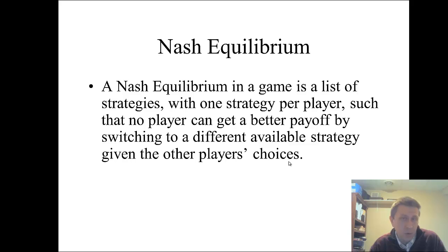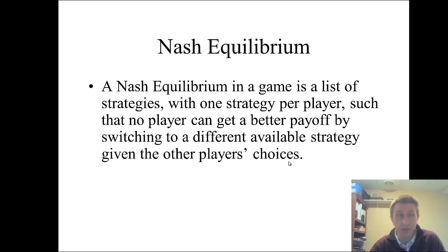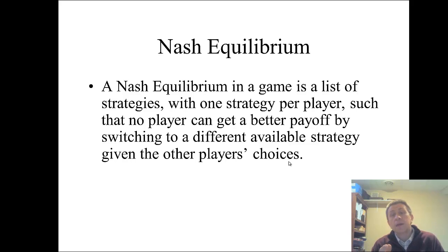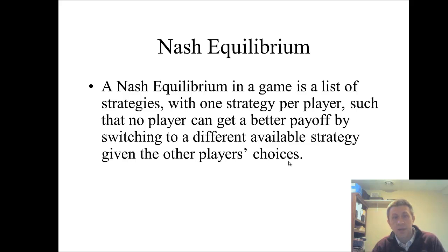So what is the Nash equilibrium? It's a list of strategies — each player is playing a particular strategy — where no player can get a better payoff by switching to any other choice, given what everybody else is already doing. When we think of what the term equilibrium means, it's a stable point — nobody wants to do anything different. Nash equilibrium is the same thing: given what everybody else is doing, you would not want to change your strategy choice.